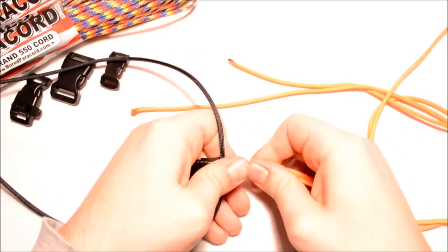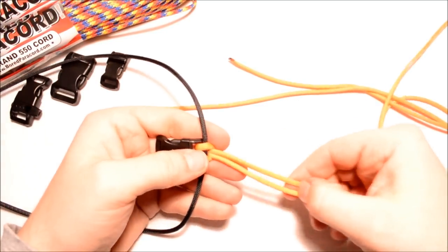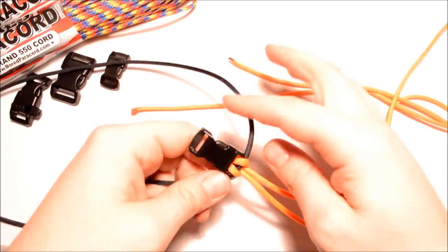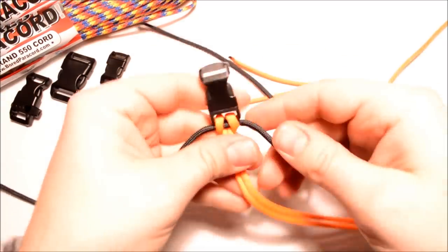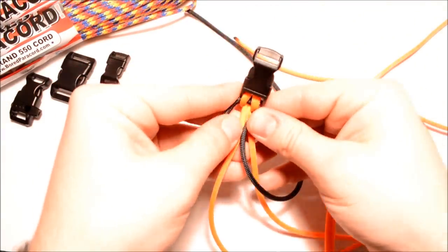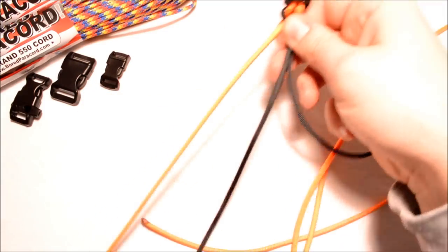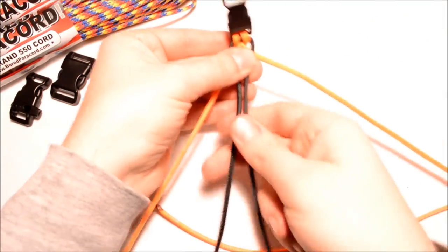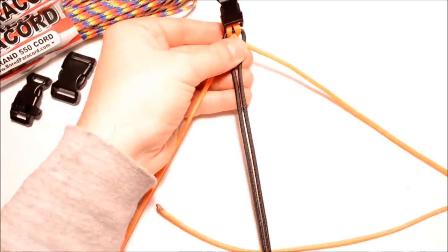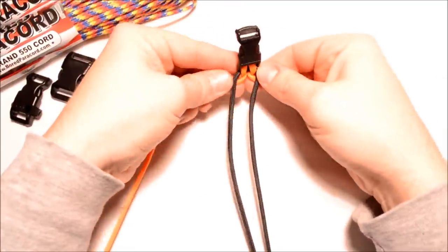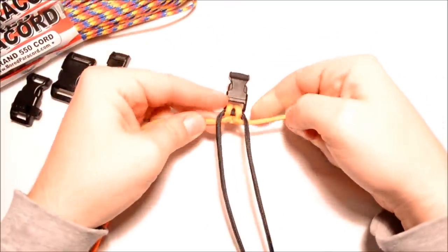The black is what we're going to be running the Solomon around. We're not going to be using the orange as the core because we're going to add the buckle at the end. Then we can actually go right into this one and just put your black right down at the bottom and bring your oranges around this way.